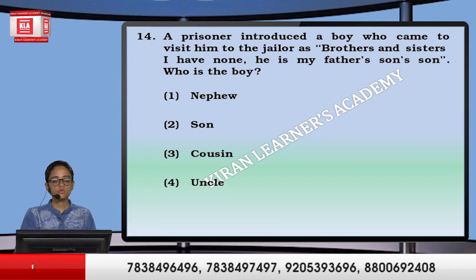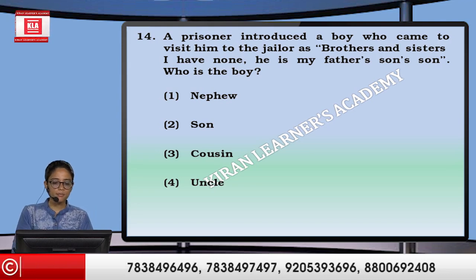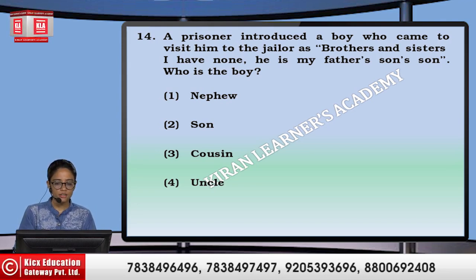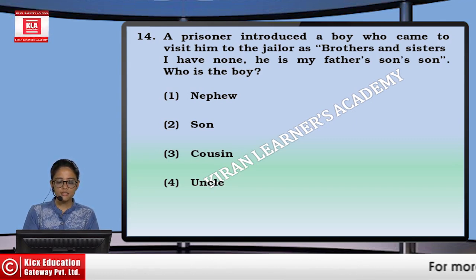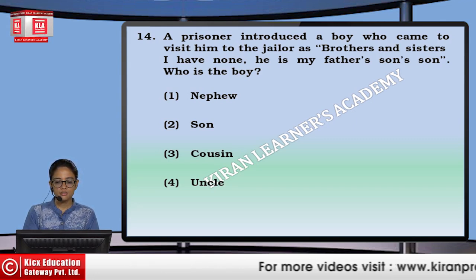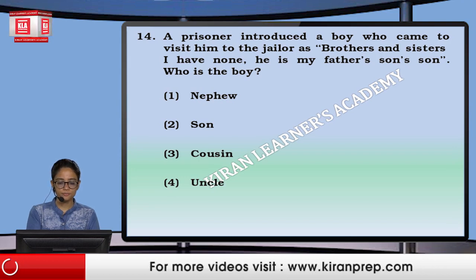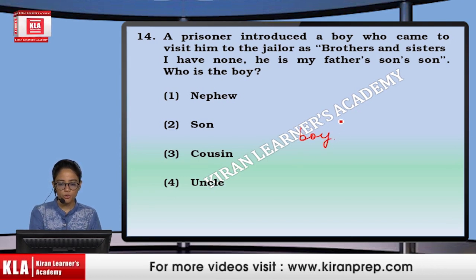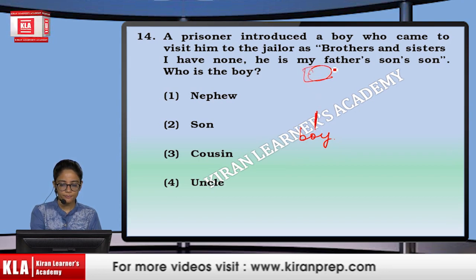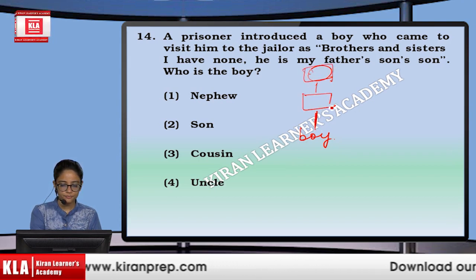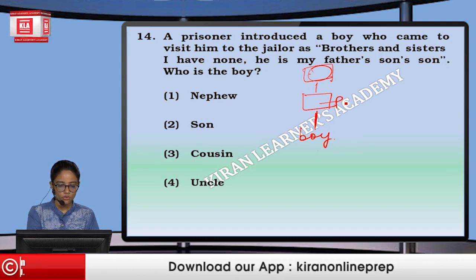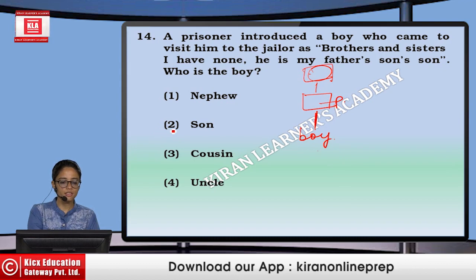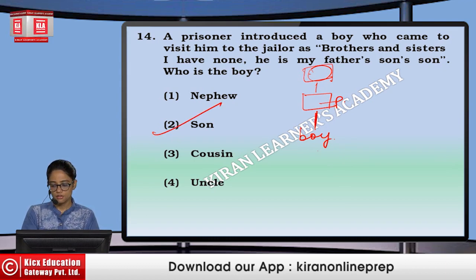Next: a prisoner introduced a boy who came to visit him to the jailer as — brothers and sisters I have none. He is my father's father's son's son. Boy is my father's son. So who is the boy? The boy is the son of the prisoner.